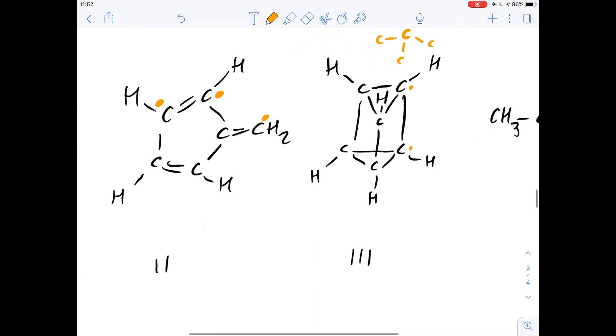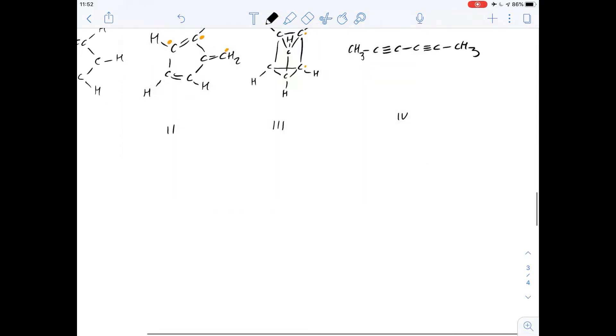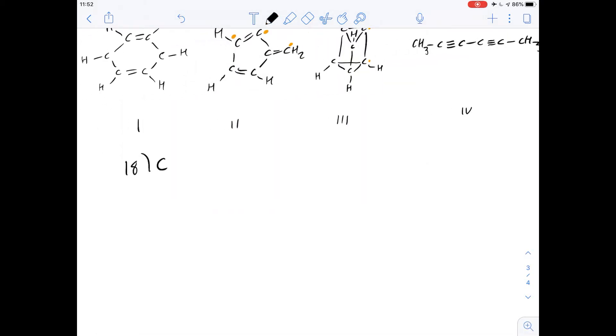So that means there's three for structure 2 and one for structure 3, meaning that the answer to number 18 is C.